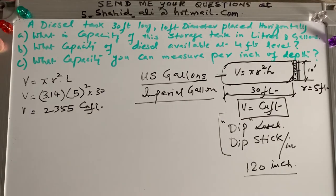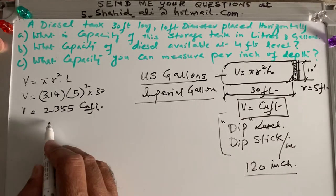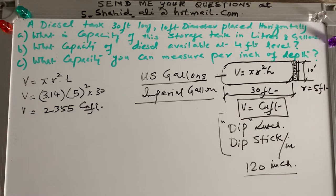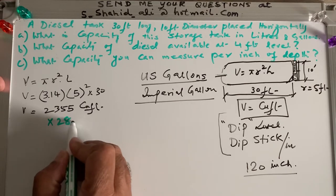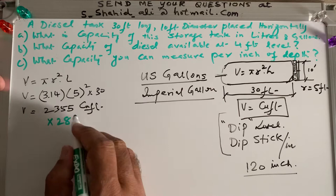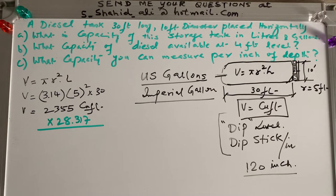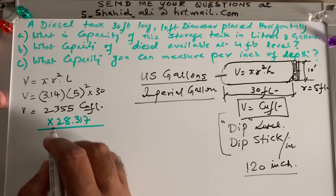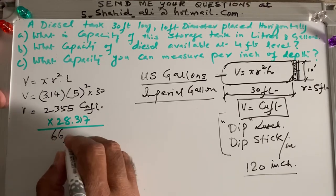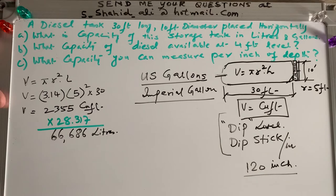But this is cubic feet. We are looking at liters and gallons. So to convert this into liters, we have to multiply. Remember this factor? We have to multiply this cubic feet multiplied by 28.317. So if we multiply cubic feet with 28.317, we will be having liters. So we have cubic feet. So we convert it by multiplying this by 28.317, which gives us 66,686 liters. So this tank is 66,686 liters.